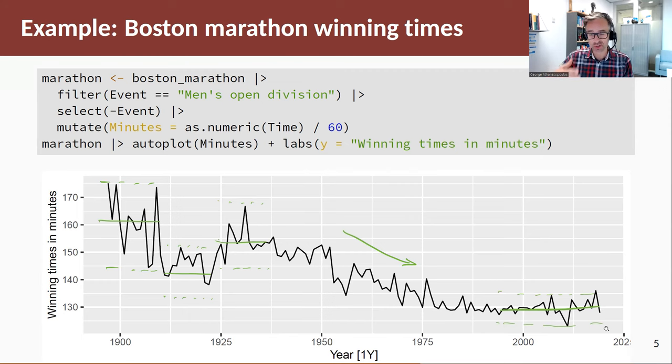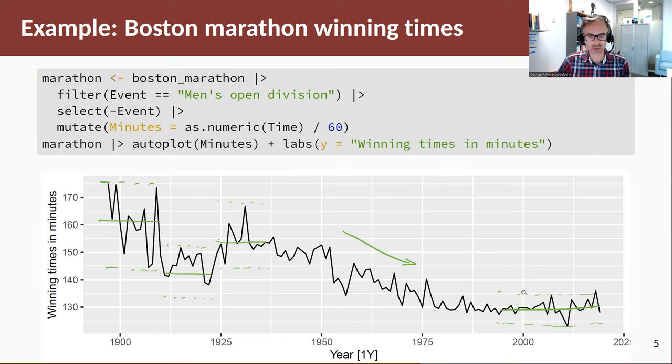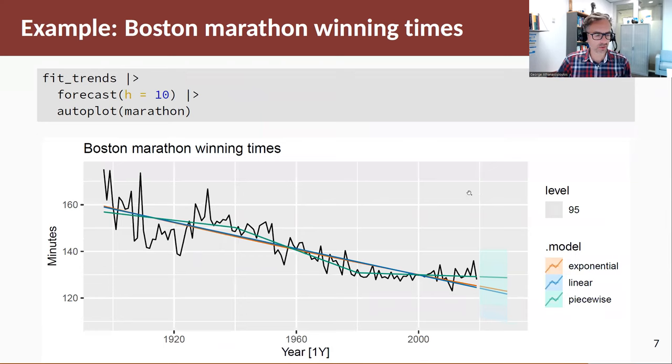If I fitted a linear trend and extrapolate it forward, at some point I'm going to cut the x-axis, so y is going to be zero, which is completely unrealistic for running times. At least with an exponential trend, that will never be zero—it's going to asymptote. The third model we're going to look at is putting a couple of knots at 1940 and 1980. Let's have a look at this fit.